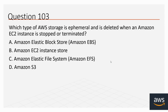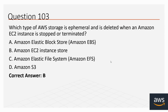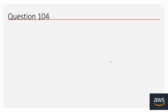Question number 103: Which type of AWS storage is ephemeral and is deleted when an Amazon EC2 instance is stopped or terminated? Options: A. Amazon Elastic Block Store (EBS), B. Amazon EC2 Instance Store, C. Amazon Elastic File System (EFS), D. Amazon S3. The correct option is B, Amazon EC2 Instance Store.